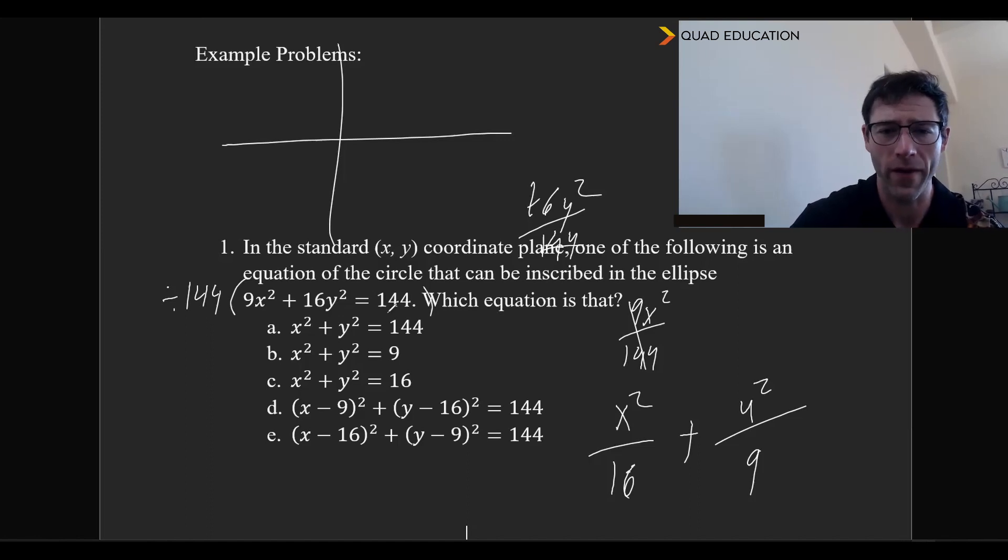And then 144 over 144 is 1, which leaves us back in a state of understandable ellipse, where we have the major axis being with the major axis being 4, because that's what 16 squared is, because a² is equal to 16.